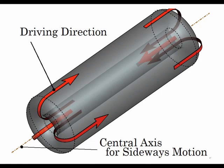The basic concept of the torus omnidirectional driving unit without singular lines is shown in this figure. There is an active rotational axis at its center. By rotating this central axis, the unit can realize smooth motions in arbitrary directions.